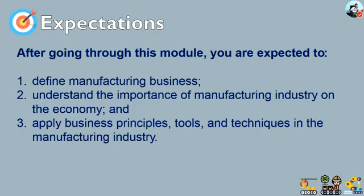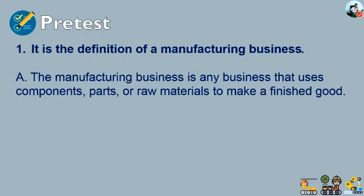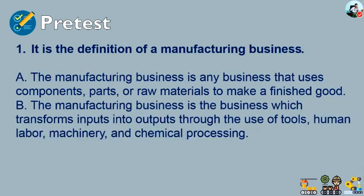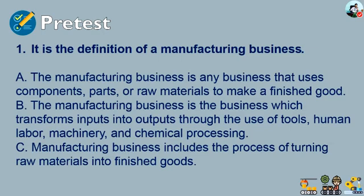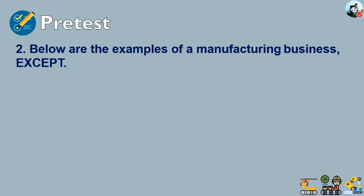Before we proceed to our formal lesson, we will have a pre-test. First question: it is the definition of a manufacturing business. A) the manufacturing business is any business that uses components, parts, or raw materials to make a finished good. B) manufacturing business is the business which transforms inputs into outputs through the use of tools, human labor, machinery, and chemical processing. C) manufacturing business includes the process of turning raw materials into finished goods. D) all of the above. The answer is letter D, all of the above.